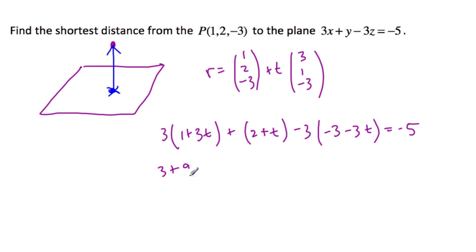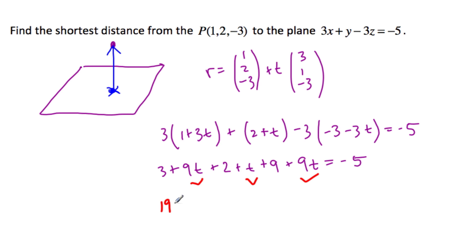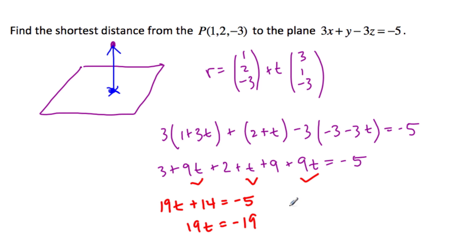So we have 3 plus 9t, plus 2 plus t, plus 9 plus 9t, is equal to minus 5. Let's gather our t's: 9 plus 1 is 10, plus 9 is 19t. And then 3 plus 2 is 5, plus 9 is 14. So that's plus 14 equals minus 5. Subtracting 14, we've got 19t is equal to minus 19, so t is equal to 1.